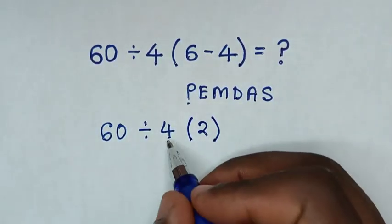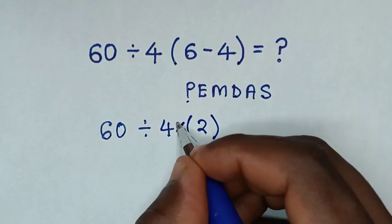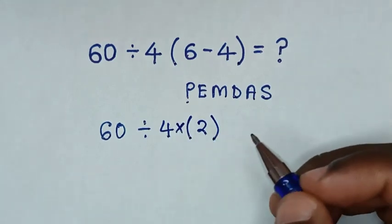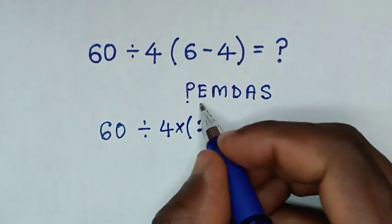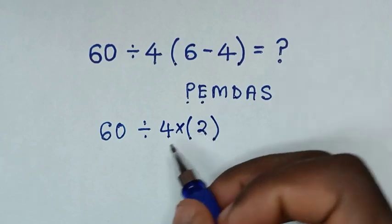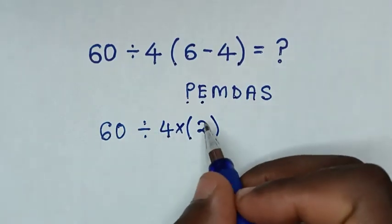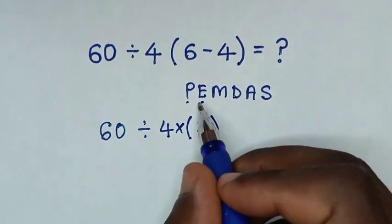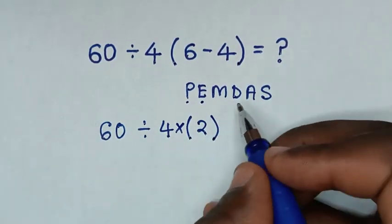Then between 4 and 2, here we have a multiplication sign. From this rule, we don't have exponents — in this problem, we don't have exponents.